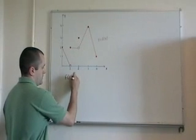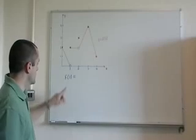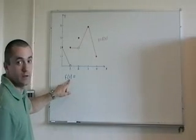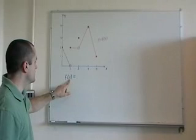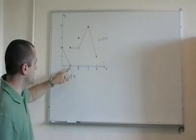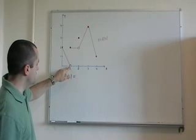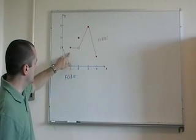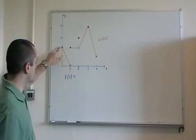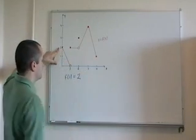Let's begin by finding what f of 1 is. This is asking: when x equals 1, what is the corresponding y value? You go to x equals 1, go up to where it hits the graph there, then go across to find the corresponding y value, and the answer is 2.